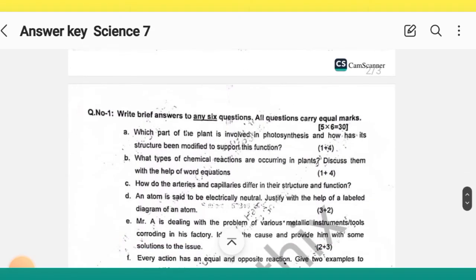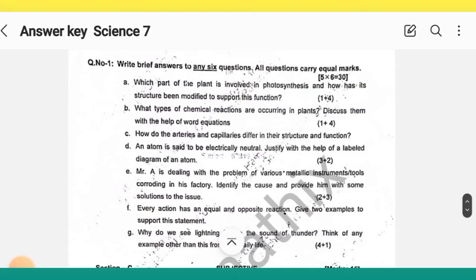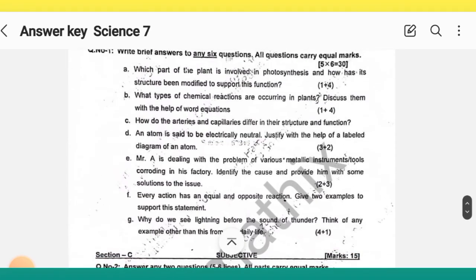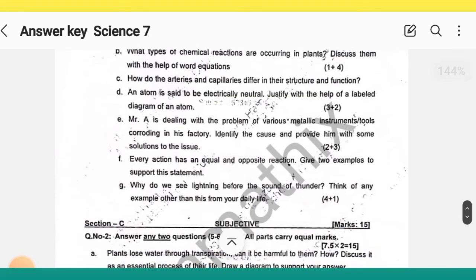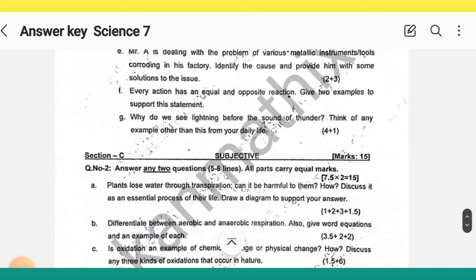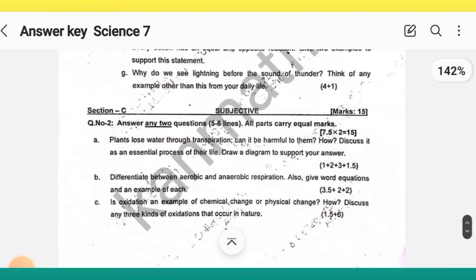Then subjective portion, you have to write brief answers, six of any of six questions and seven is given. So these were your questions. And in section C you have to do two questions and three are given to you.